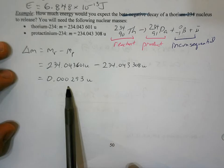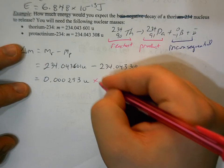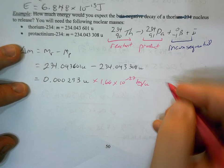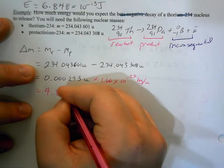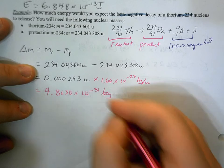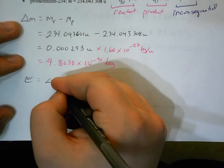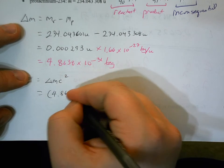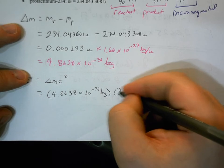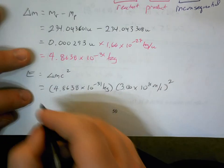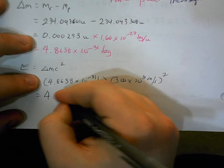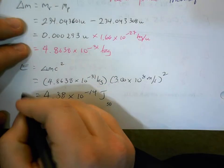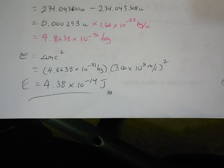This answer has three significant digits, so we expect three significant figures at the end. Converting: 0.000293 u × 1.66 × 10⁻²⁷ kg/u ≈ 4.8638 × 10⁻³¹ kg. Then E = mass defect × c²: (4.8638 × 10⁻³¹ kg) × (3 × 10⁸ m/s)² ≈ 4.38 × 10⁻¹⁴ joules. So ignoring the beta particle and anti-neutrino masses, this beta decay releases about 4.38 × 10⁻¹⁴ joules.